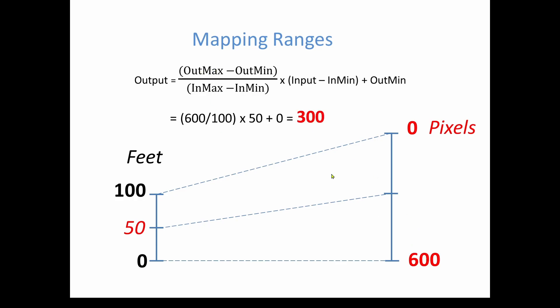So out max is 600. Out minimum is 0. So it's 600 on the numerator. In maximum is 100 minus in minimum is 0. So it's divided by 100 times the input minus the input minimum. So the input is 50 minus 0 is 50. Plus the output minimum, which is 0. So if you go through and calculate that, it's 600 over 100, which is 6, times 50 plus 0, which is 6 times 50 is 300. So you can see we got the correct mapping answer.